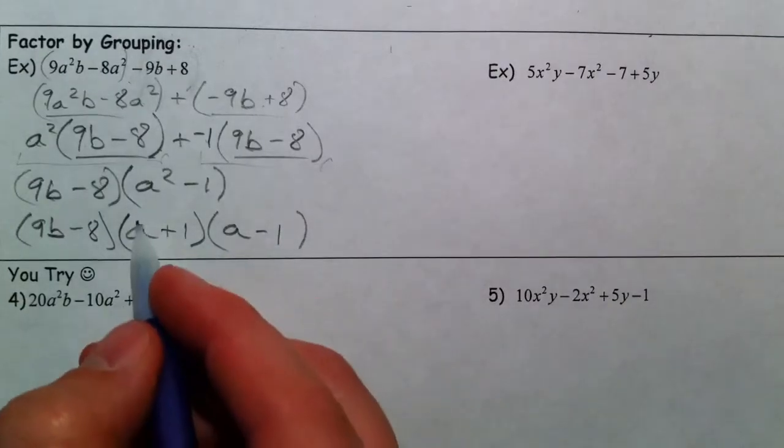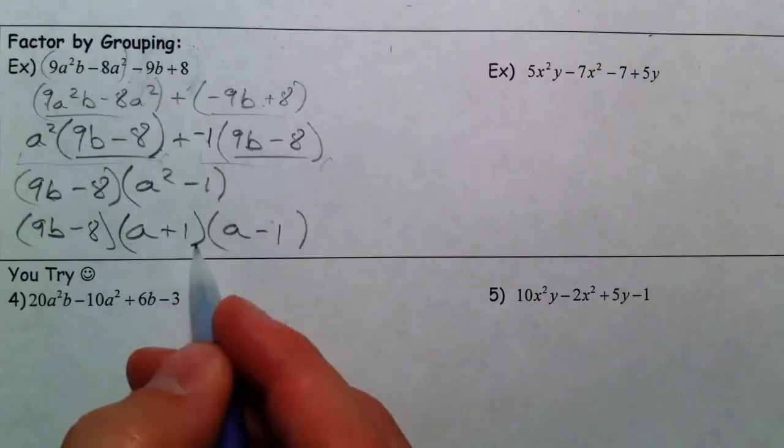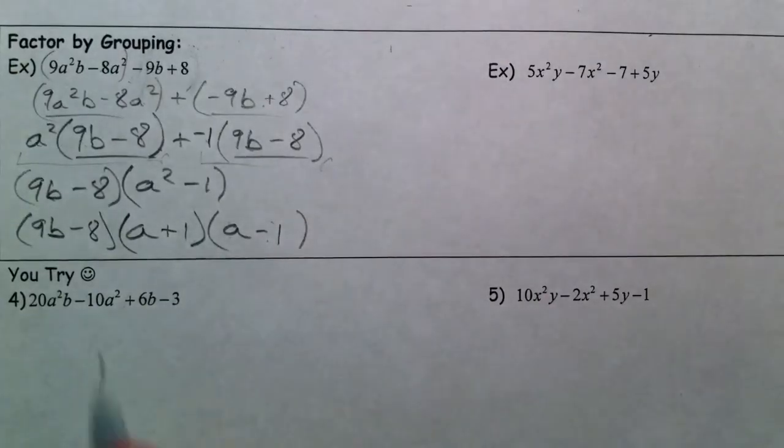That factors into a plus 1, a minus 1. Because a squared minus a, positive a, those a's cancel out, and then you just get the minus 1 if you multiply it back out.